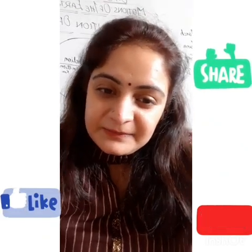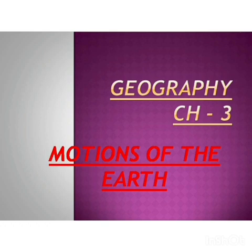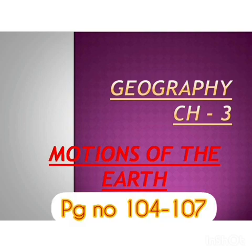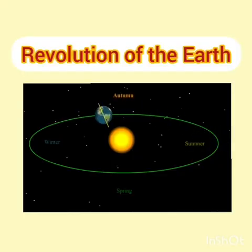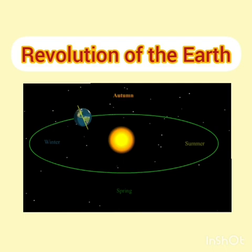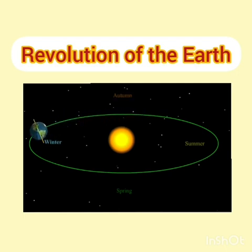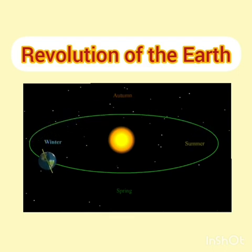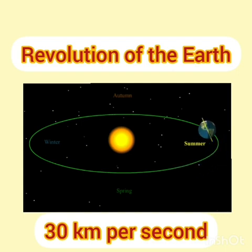In our previous class we studied about rotation. Today we are going to cover the revolution of the earth. Please refer to page number 104 to 107. The earth, while rotating on its axis, also revolves around the sun — you can see in the image it is continuously revolving around the sun. This motion is called revolution. The earth revolves around the sun from west to east, and the speed of the earth's revolution is about 30 kilometers per second.